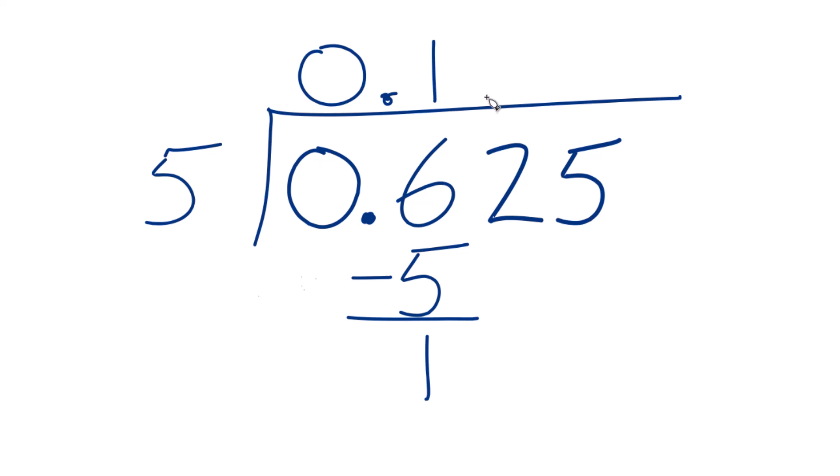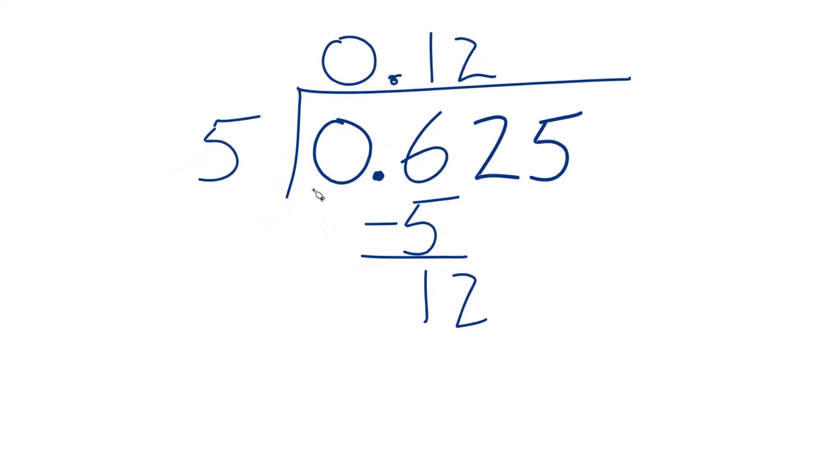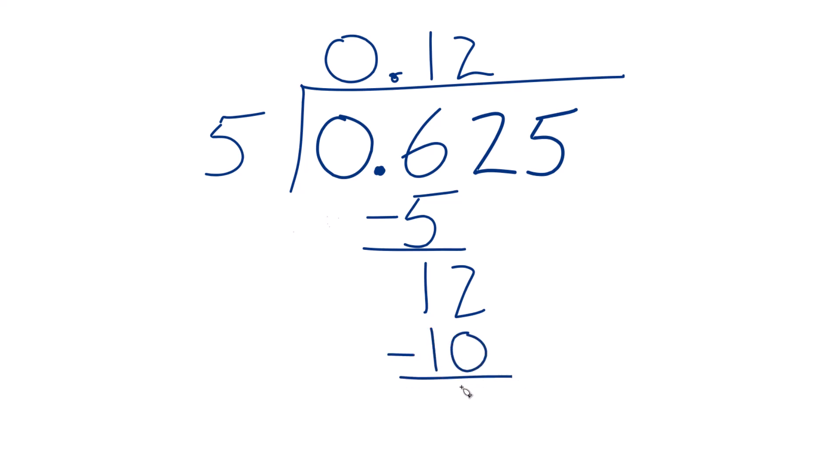It doesn't go into 1, so we'll move over one place, bring this 2 down. 2 times 5, that's 10. Subtract, we get 2.